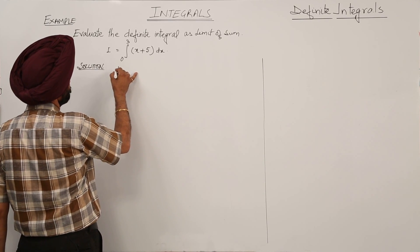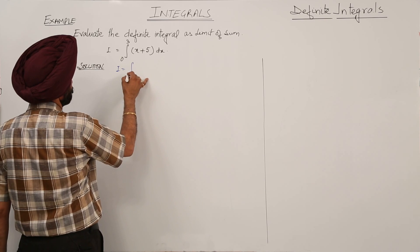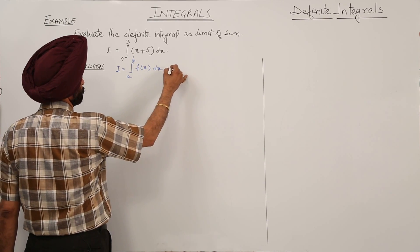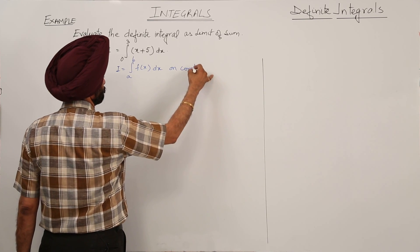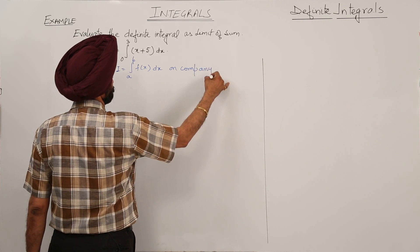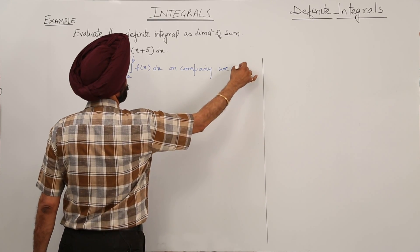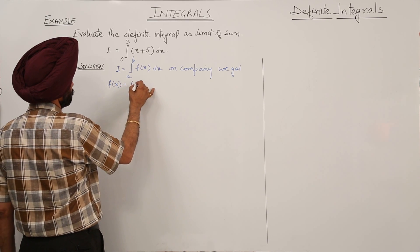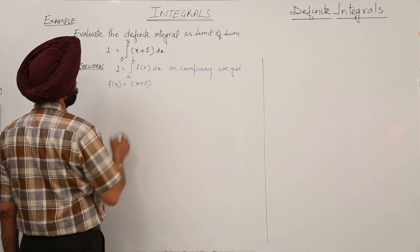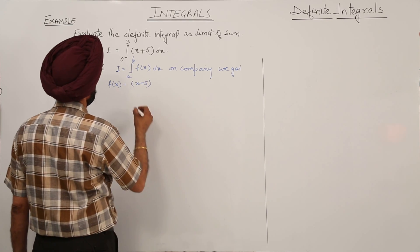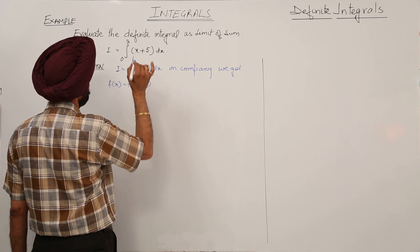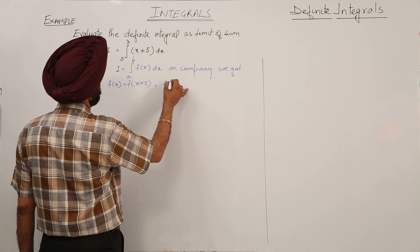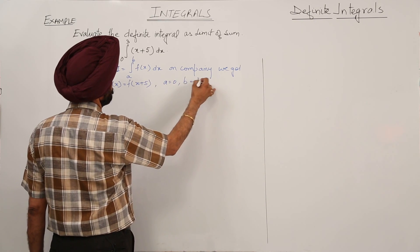Comparing with the integral from a to b of f(x) dx. Now what we are getting: f(x) is equal to x plus y, so f(x) is equal to x plus 5. Then a is equal to 0, b is equal to 3.